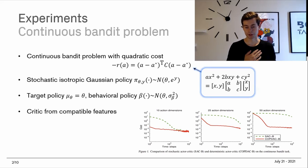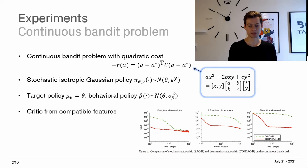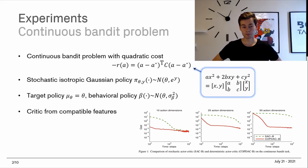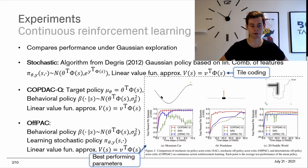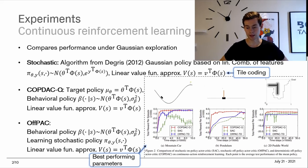This is the cost function — so the lower value we have, the better it is. Moving on from this continuous bandit problem, we have three more problems in particular: namely the mountain car problem, the pendulum problem, and the 2D puddle world problem.